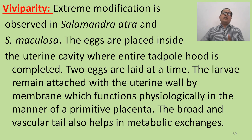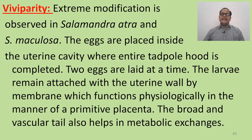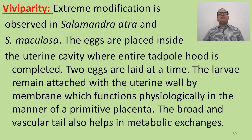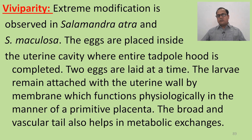Viviparity: the extreme modification is observed in Salamandra atra and Salamandra maculosa. The eggs are placed inside the uterine cavity, where entire development is completed. Two eggs are laid at a time, and the larvae remain attached to the uterine wall by a membrane which functions physiologically in the manner of a primitive placenta. The broad and vascular tail also helps in metabolic exchanges.